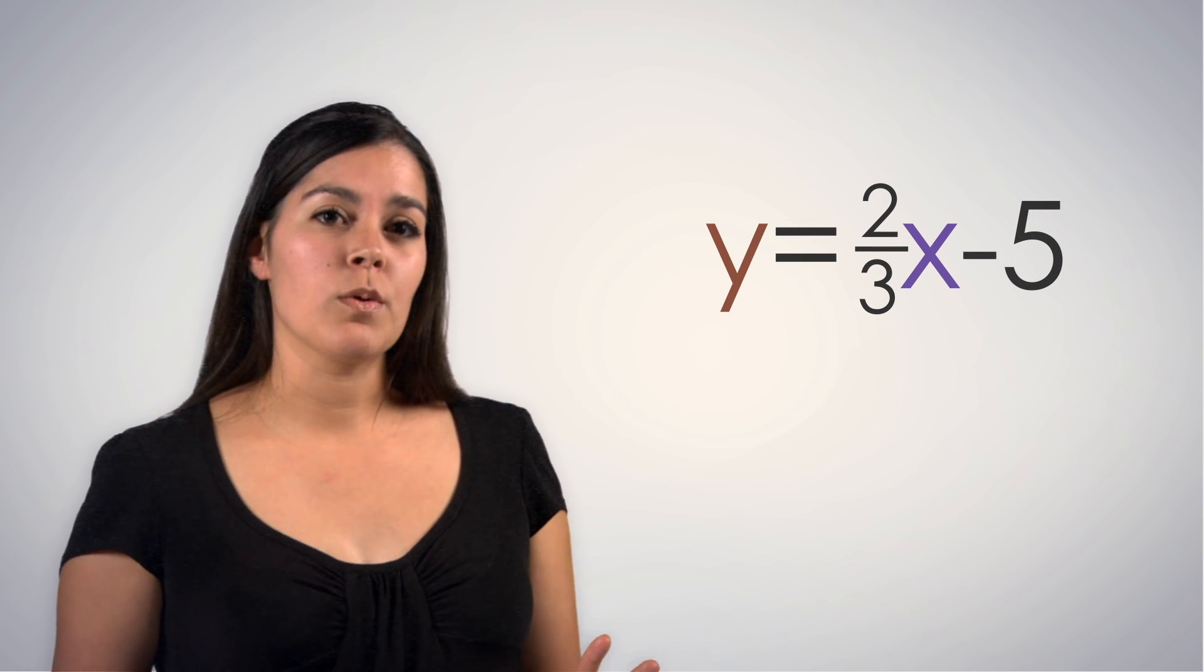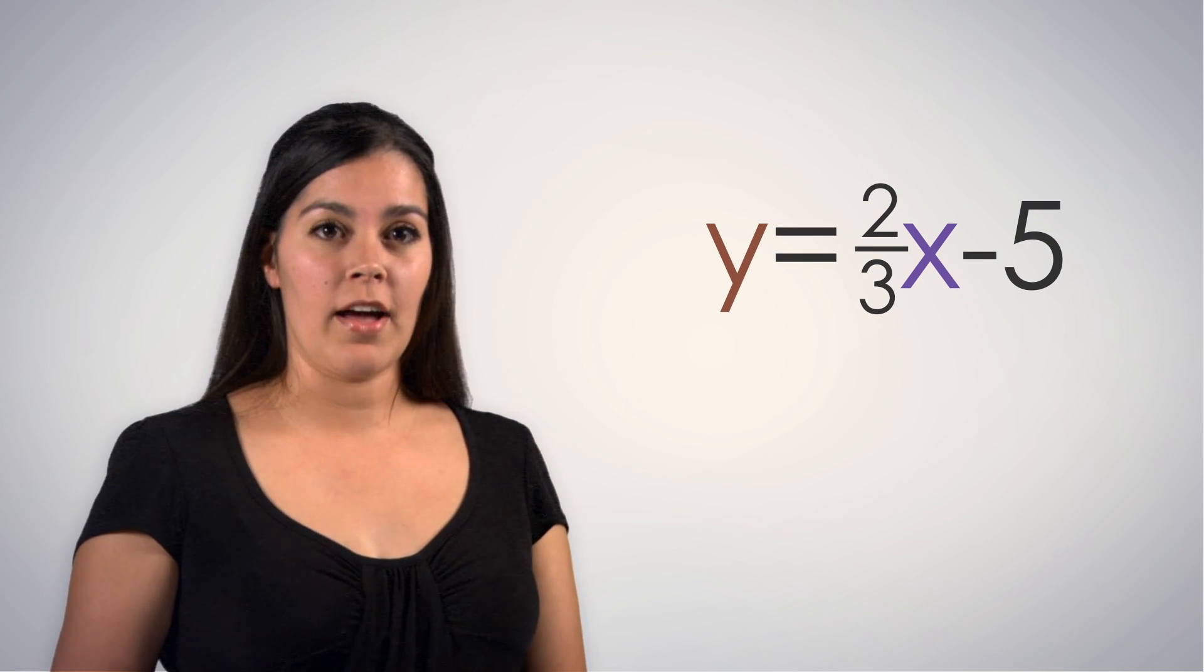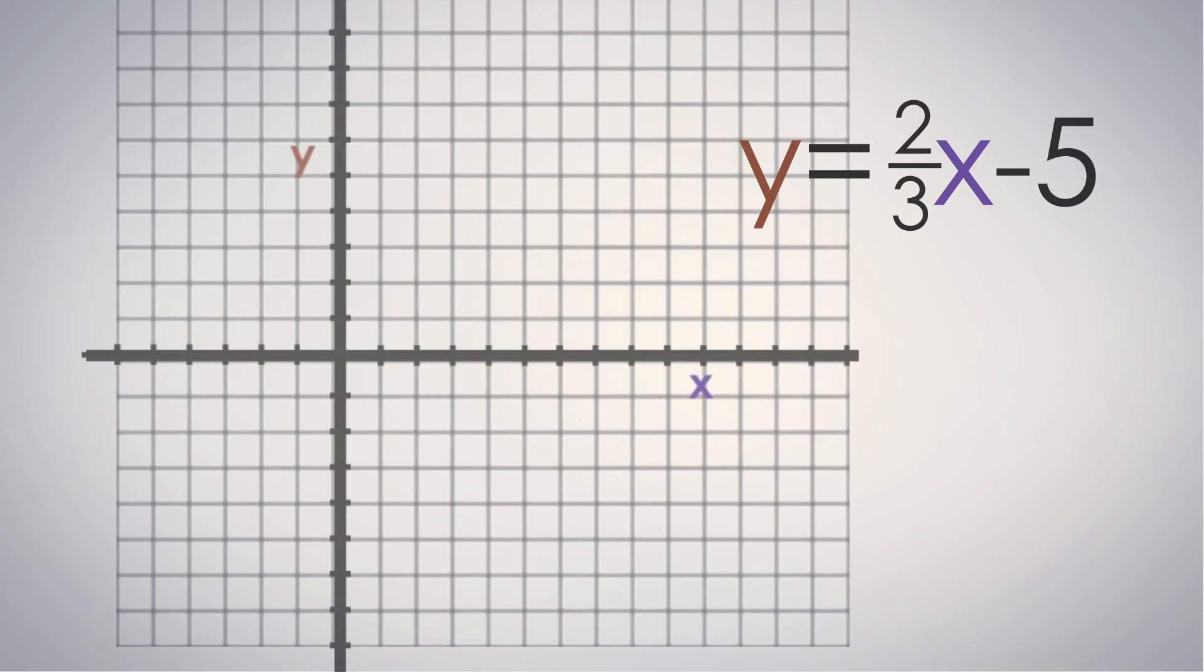This is a nifty formula for shortcut graphing without making a table. Let's look at how to quickly graph y equals 2 thirds x minus 5. We always plot the y-intercept first. From there, we move the way our slope is telling us to move. In this case, up 2 and over 3. Connect the dots and you're done.